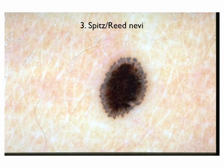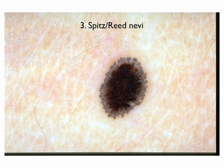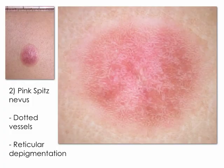The third category is represented by starburst Spitz-Reed NEVA. Starburst NEVA are peculiar melanocytic NEVA, usually acquired, that are seen in both children and adults. The most relevant and peculiar feature is the starburst pattern seen by dermoscopy, typified by multiple streaks of pigmentation or large globules arranged symmetrically at the periphery of the lesion in a radiating pattern like that of a star. Dotted vessels and reticular depigmentation are seen in non-pigmented Spitz NEVA, as is the case here.